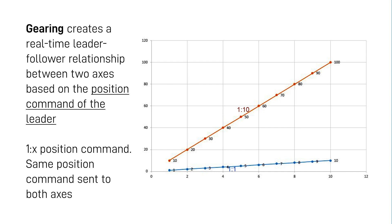Gearing, on the other hand, creates and maintains a continuously proportional relationship between your follower axis and your leader axis based on a fixed ratio. So as your leader axis moves, your follower axis will move by a proportional amount, and this happens at the encoder count level. So if you set your relationship to a 1-to-1 ratio, for every 1 encoder count the leader makes, the follower axis will also make a 1 encoder count move. Same for something like a 1-to-10 ratio — for every 1 encoder count the leader makes, your follower axis will move 10 encoder counts.